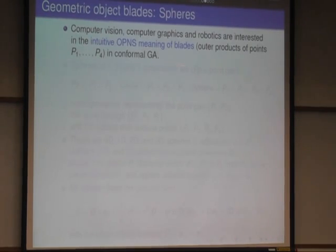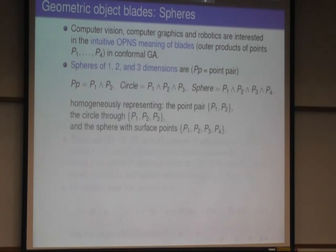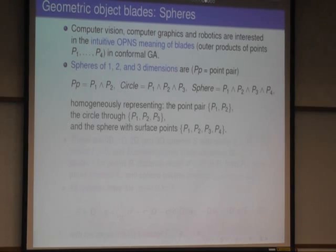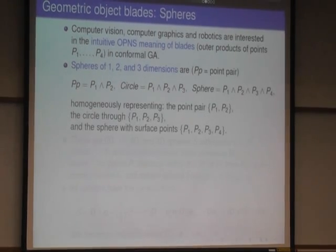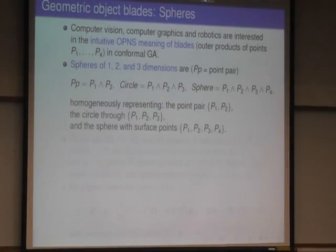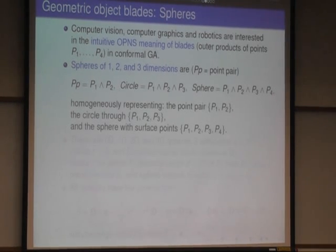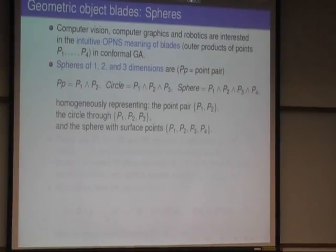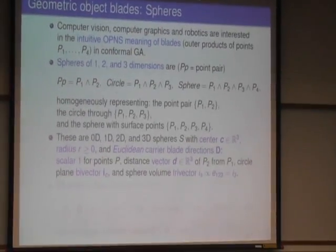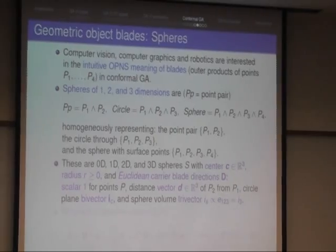Now, in the conformal geometric algebra, you can also make blades from points. And these blades have very interesting geometric interpretations. So if we take two points, we get a point pair. If we take three points, we get more than a triplet of points. We get the whole circle as a manifold determined by this blade. If we take four points on a sphere, they fully define the whole sphere as this four blade, this four-vector here.